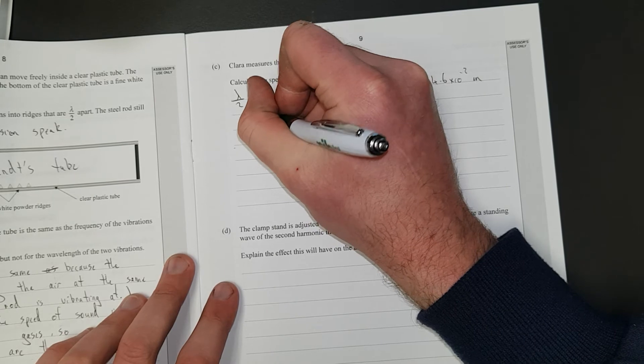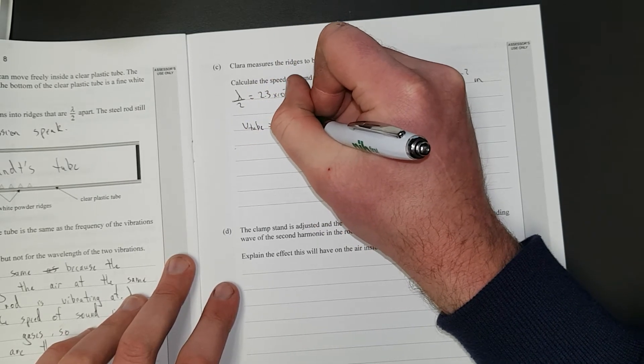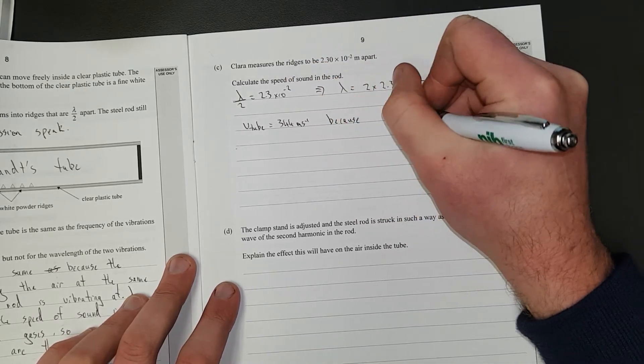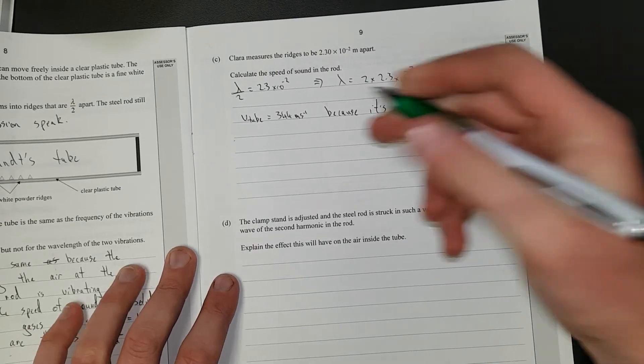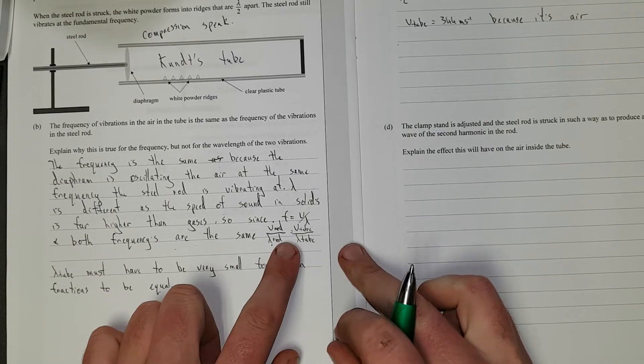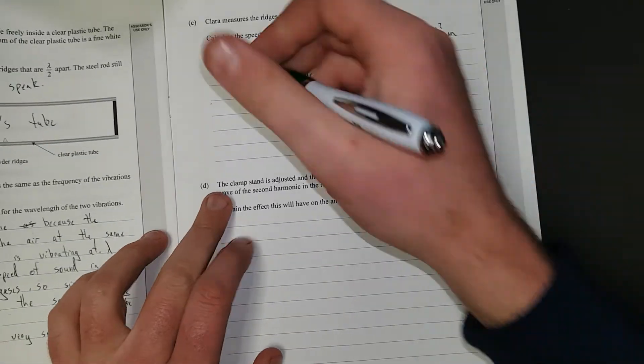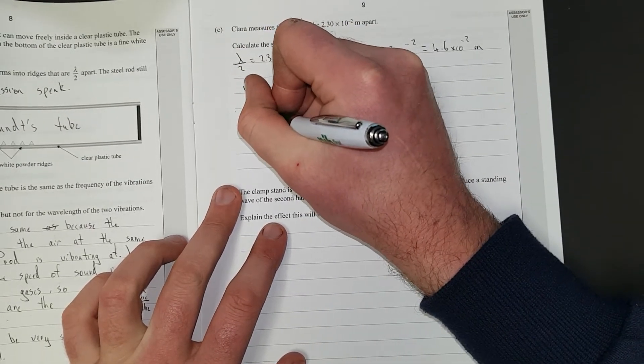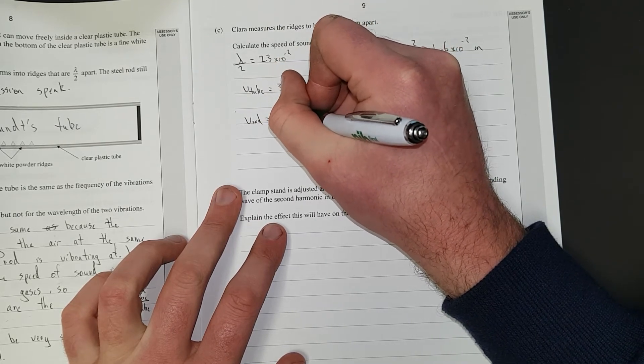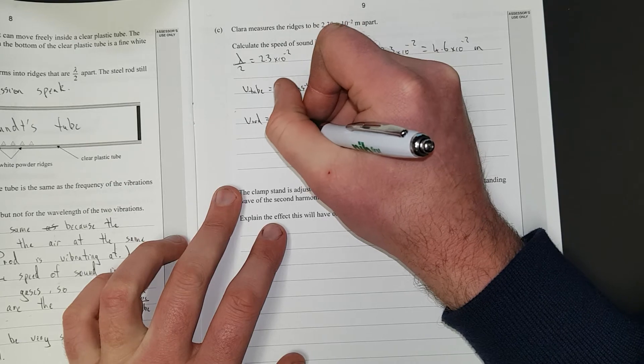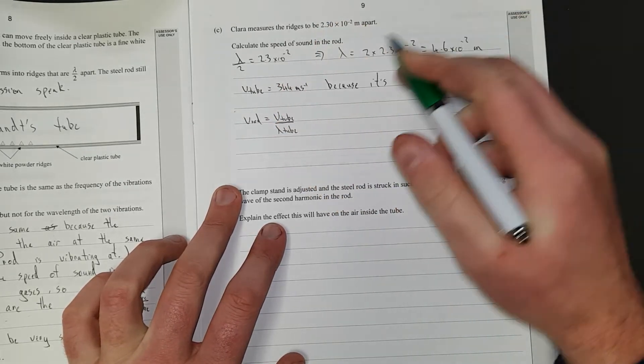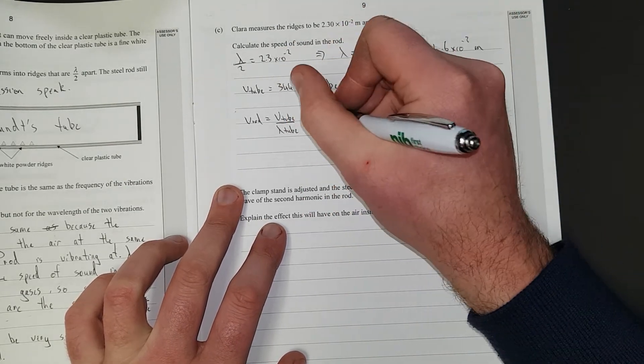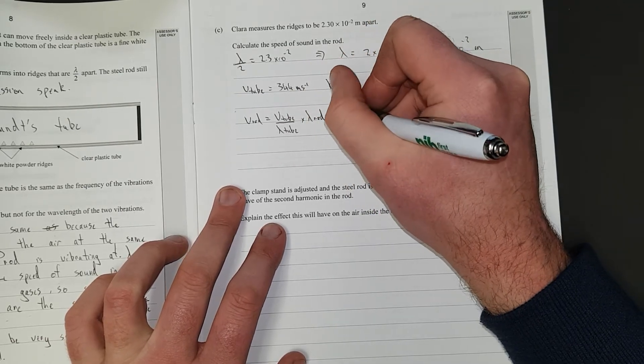Right. V tube is equal to 344 meters per second, because it's air, obviously. V rod is equal to V tube, velocity of the tube, divided by the wavelength of the tube, times the wavelength in the rod, which is given to us over the page.